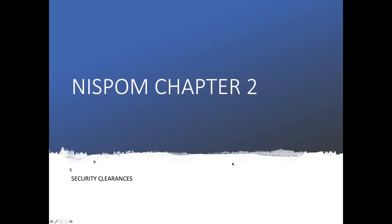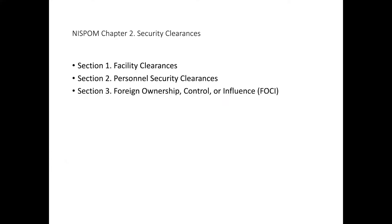We're going to talk about security clearances. In this section, we'll talk about security clearances for the facility and then the security clearance — of course, what everybody wants — their own personal security clearance, called a personnel security clearance. And then we'll talk about the level of foreign ownership, control, or influence that may make a cleared defense contractor entity vulnerable.